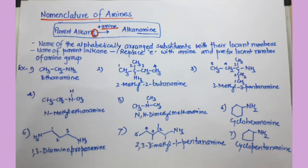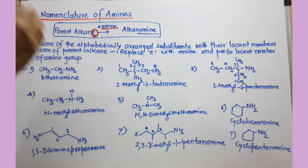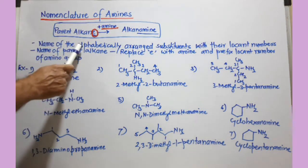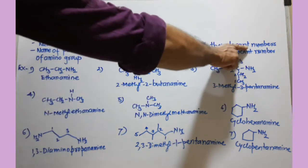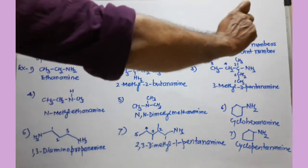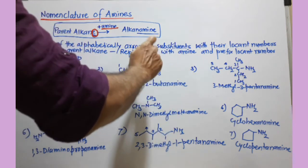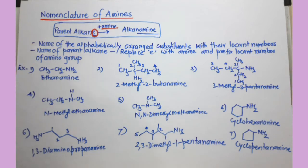Select the longest chain of carbon having the amino group. If the amino group is the only major group present in the molecule, give numbers to the selected chain such that the carbon bearing the amino group gets the least possible number. Then find the different substituents present on the selected chain and arrange them in alphabetical order along with their locant numbers — meaning at which carbon they are present. After that, find the name of the parent alkane by counting the carbon atoms on the selected chain, replace the letter 'e' from the alkane name and add 'amine', and prefix the locant number of the amino group.